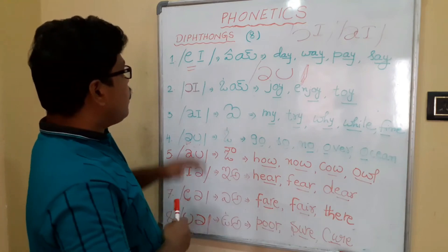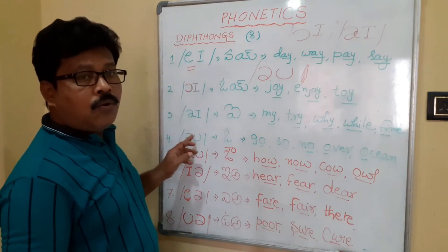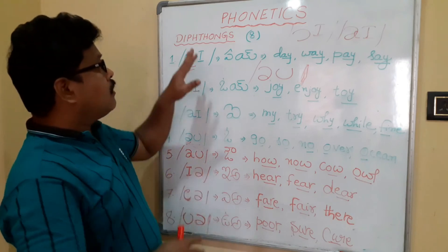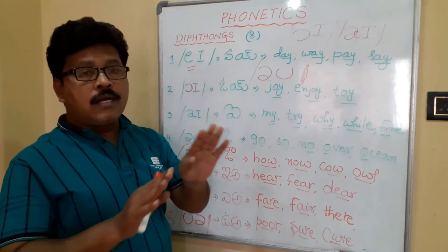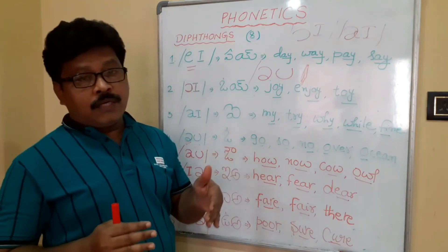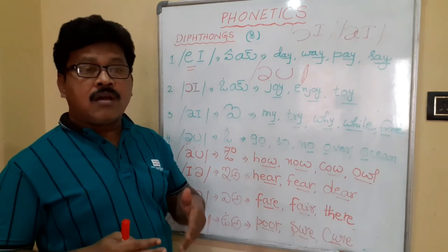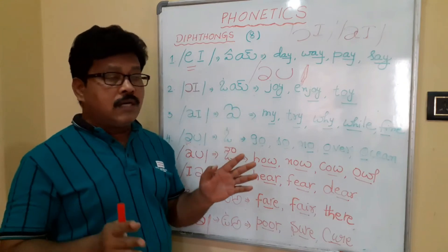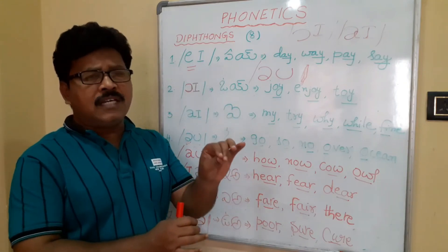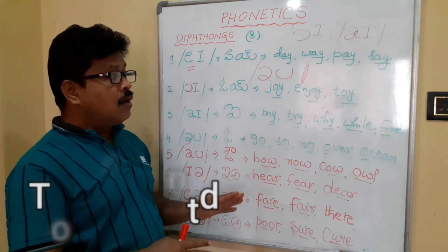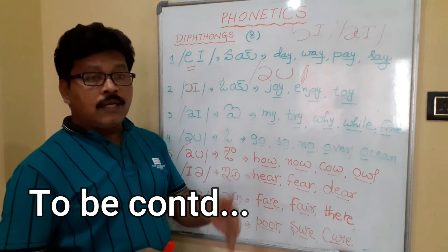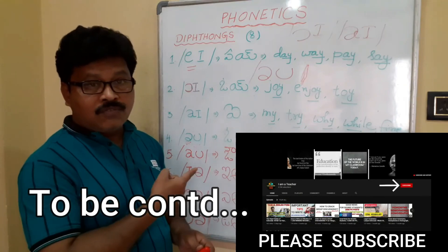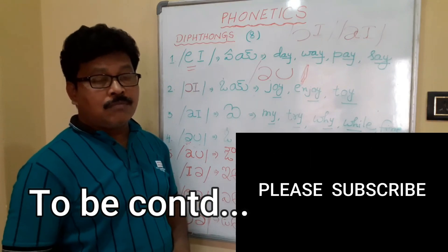Now I recap: we have covered all eight diphthongs. Together with the twelve monophthongs, the twenty vowel sounds are complete. In the next video, we are going to study the 24 consonant sounds. Don't be scared — they are very easy, even easier compared to vowel sounds. Vowel sounds are a little bit tricky, so concentrate more on those. Keep watching my videos, please like, share, comment and subscribe to my channel. Hope you enjoyed this video and found it very helpful. Take care, bye bye.